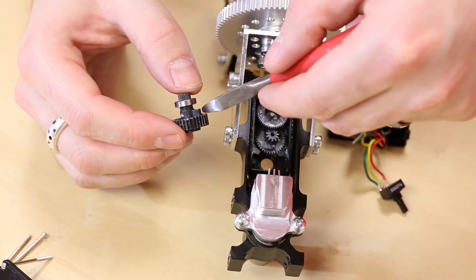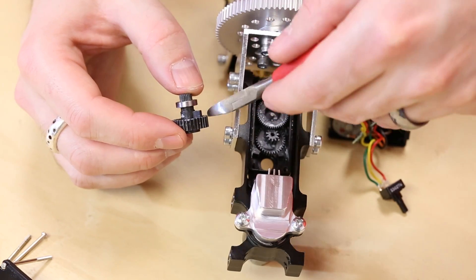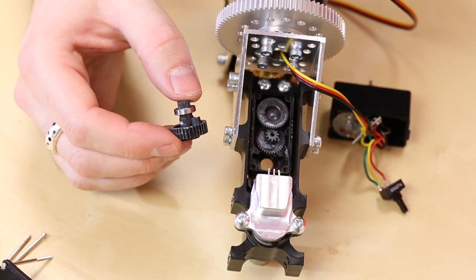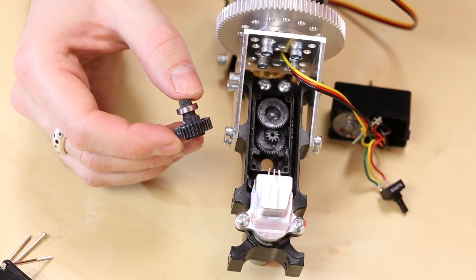Every servo is going to be a little bit different and this notch or this nub is going to be different for pretty much every servo. Some of them have just a pin, some of them have this little notch.